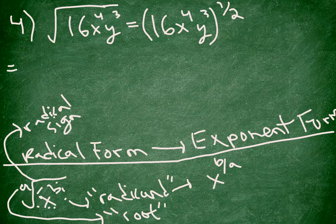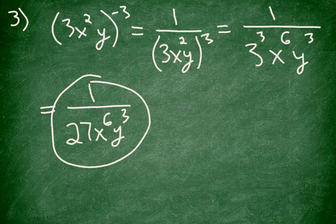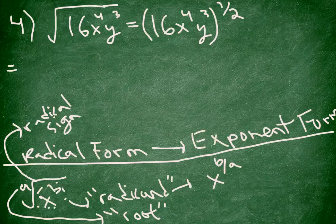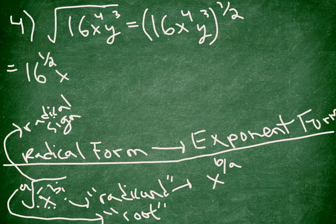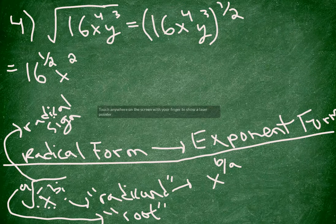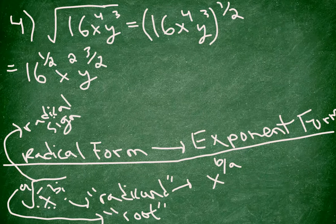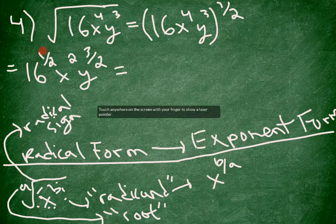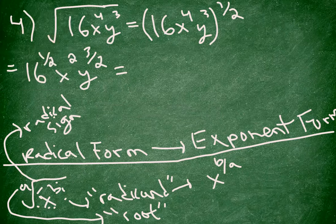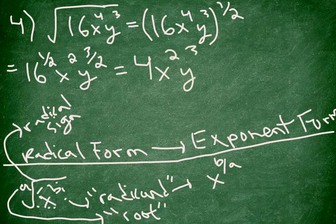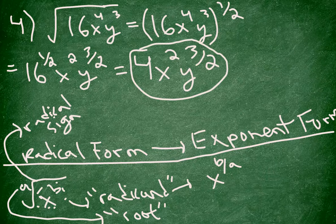And then what you can do here is use the laws that we discussed in the previous problem. What I have is a power to a power problem — just like we did before. So we can write this as 16 to the power of one half, x to the power of four times one half — well, four times one half is two — and then y to the power of three times one half, which I'll leave as three halves since that doesn't simplify. Noting that 16 to the one half means the square root of 16, which we know is four. So in the end I have four x squared y to the three halves.